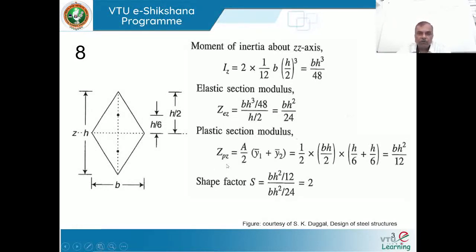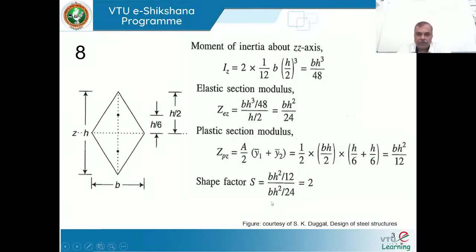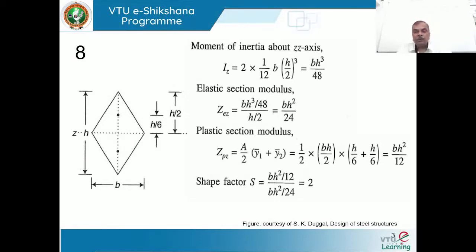The plastic section modulus is always more compared to the elastic section modulus. Therefore, the shape factor — being the ratio of plastic to elastic section modulus — equals BH²/12 divided by BH²/24, which equals 2. So the plastic moment carrying capacity when the section completely yields is 100% more than the moment capacity at the onset of yielding. That's the interpretation of shape factor.